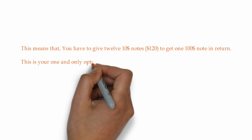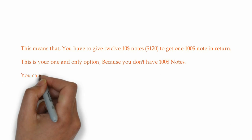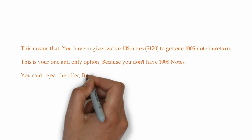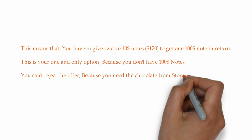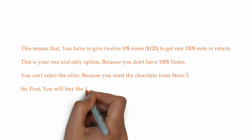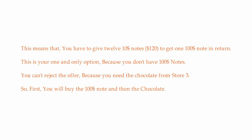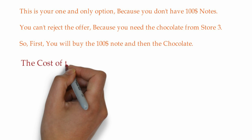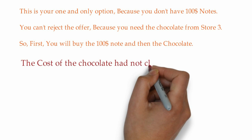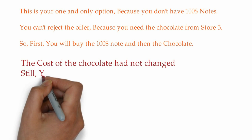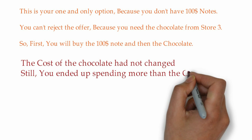This is your only option because you don't have $100 notes. You can't refuse the offer because you need the chocolate from Store 3. So you have to buy the $100 note despite the extra cost. Observe that the cost of the chocolate had not changed — still, you ended up paying more than the original amount.